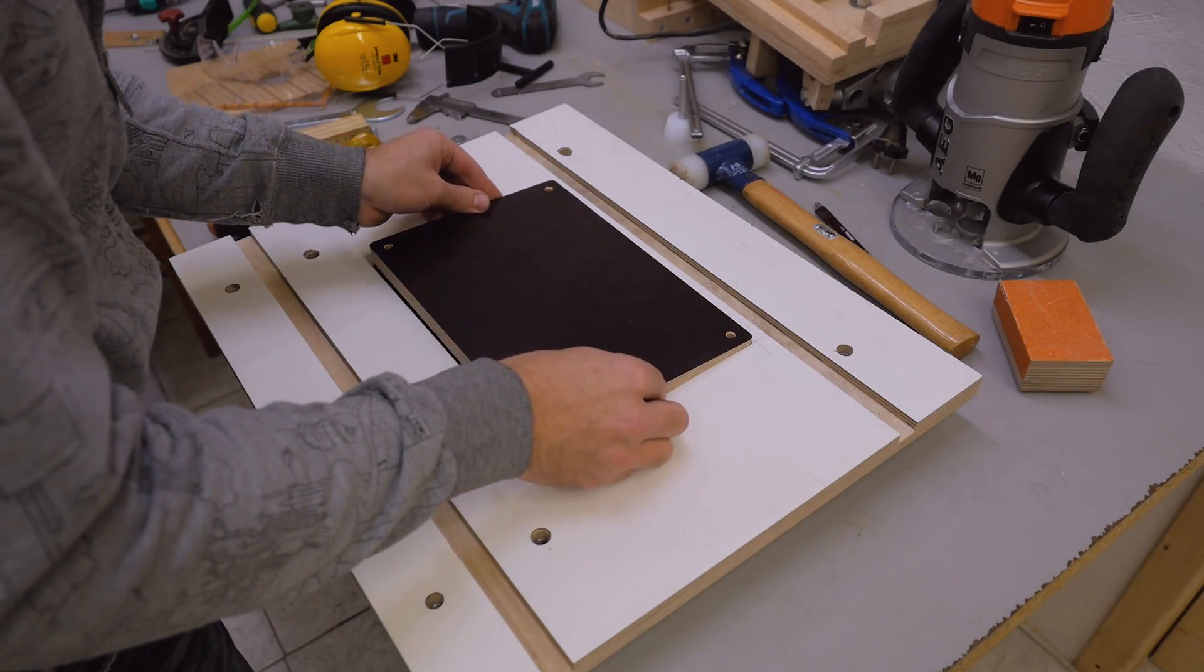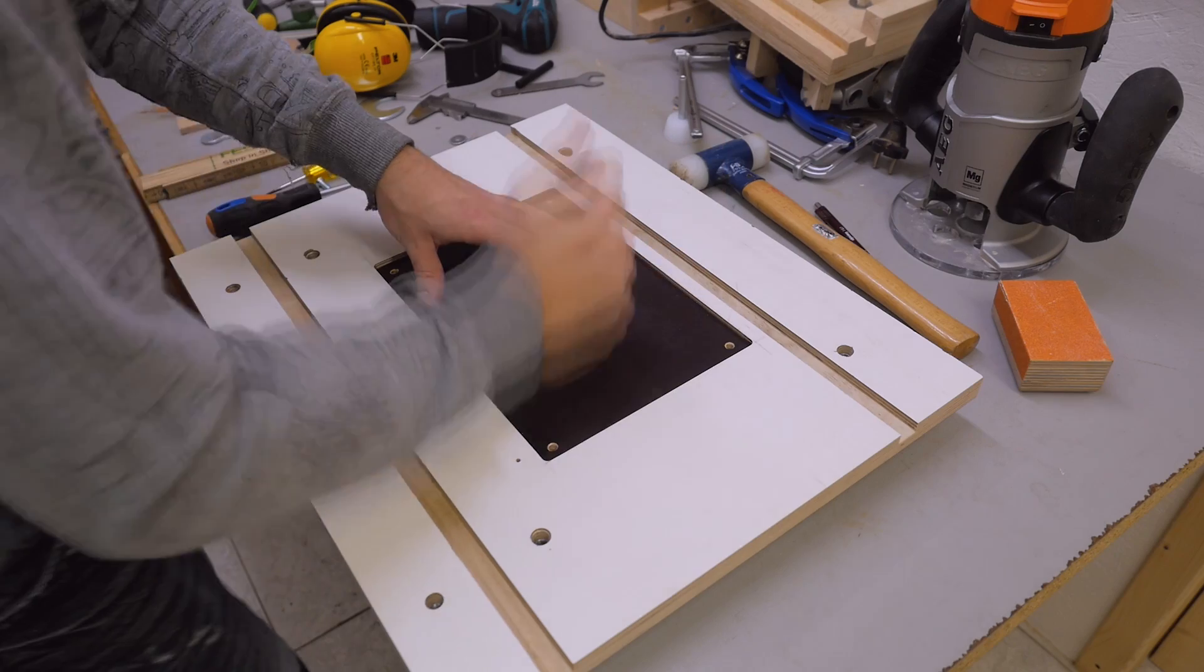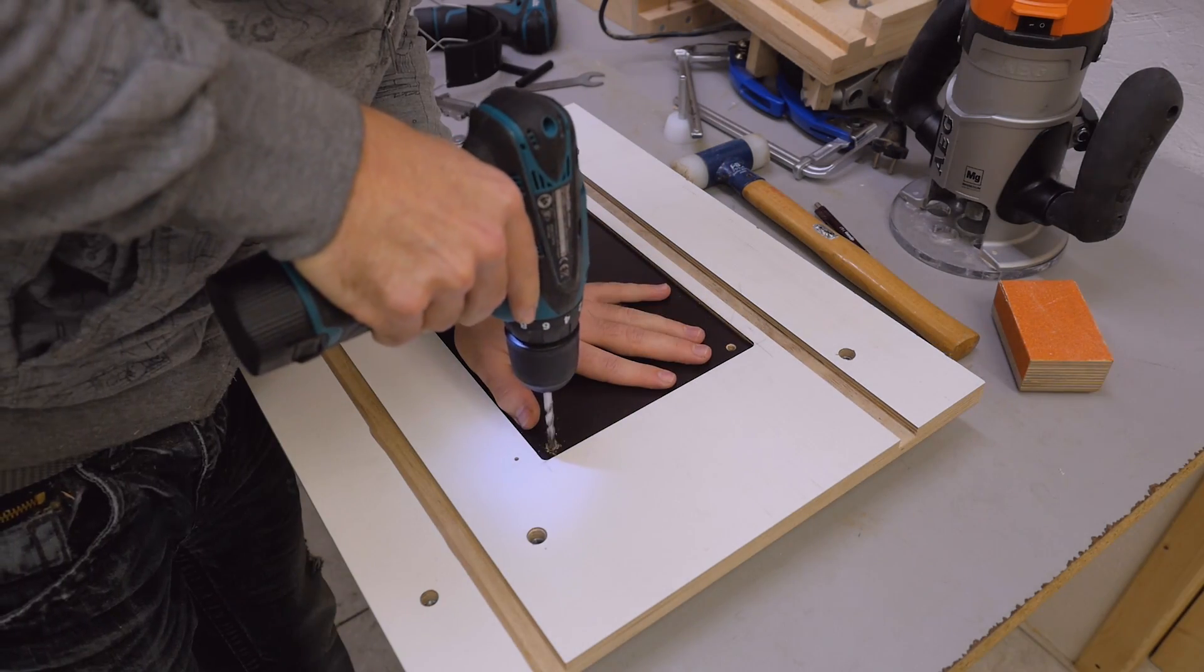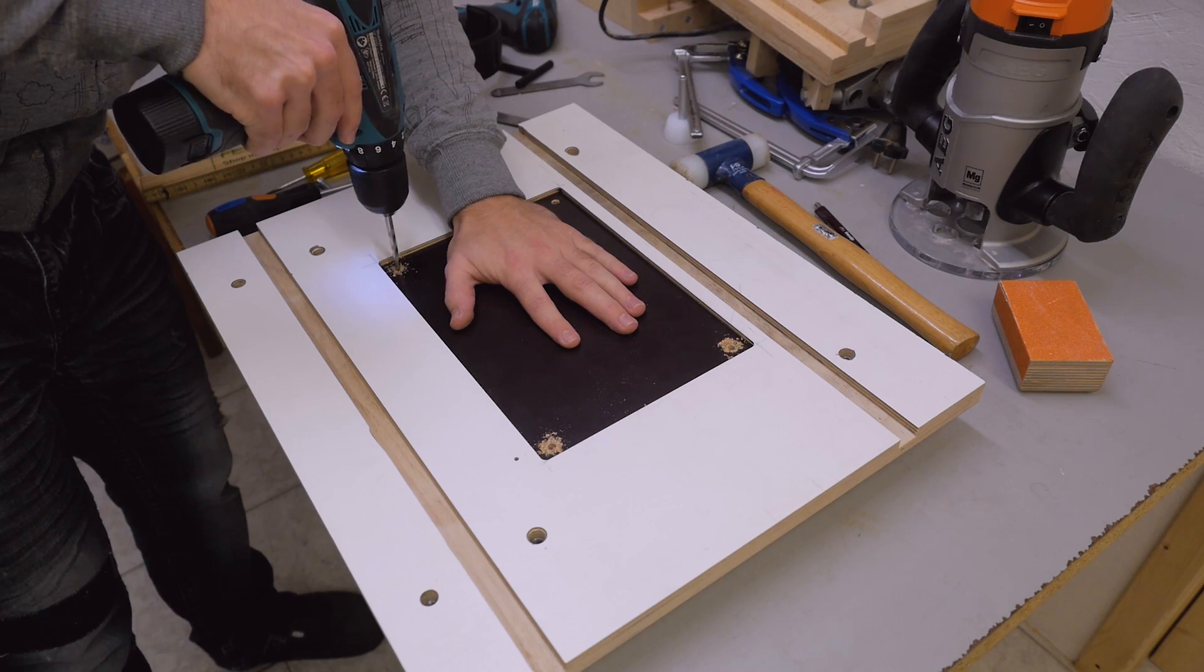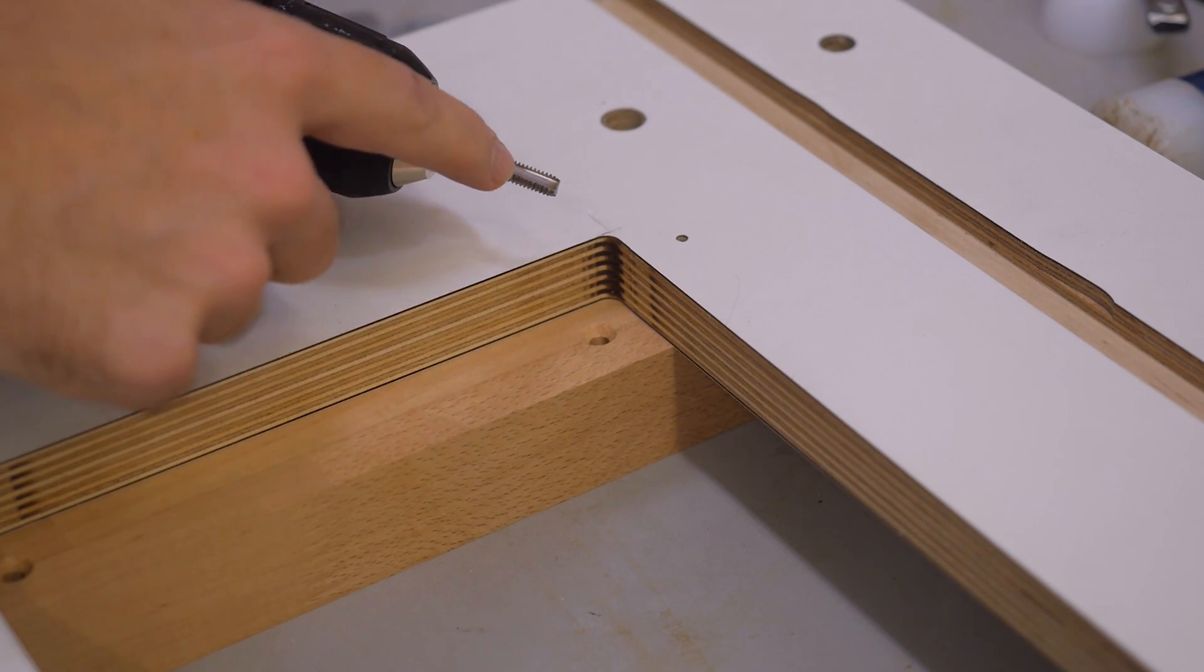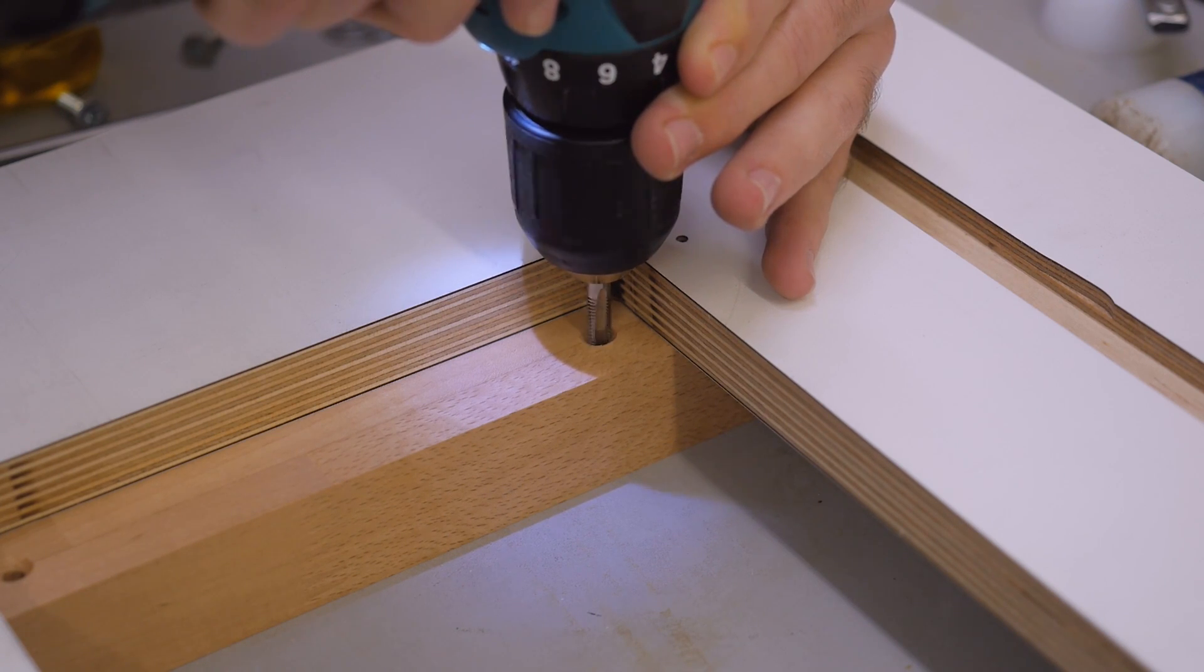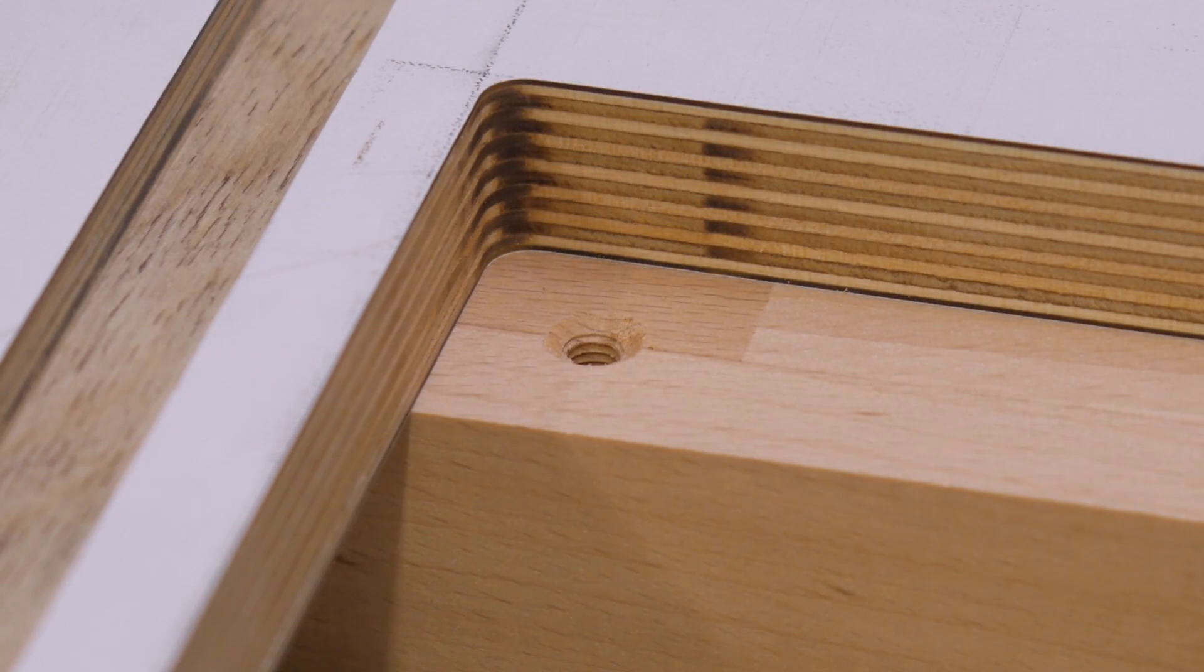Now I can drop in the insert plate again and transfer these hole locations onto the hardwood. I drilled the holes the right size for an M6 tap and I'm now going to tap the wood. If you don't believe in threads in wood, just use a threaded insert instead.